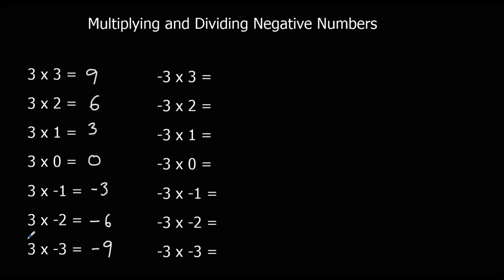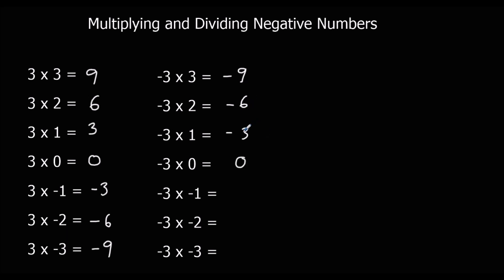In the same way that 3 lots of minus 3 is minus 9, if I flip them over the other way around, it's still 3 times minus 3, which is still minus 9. Here I've got 2 times minus 3, or minus 3 times 2, which is minus 6. 1 times minus 3 is minus 3, and 0 times minus 3 is 0. You see this time we're going up.